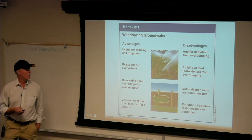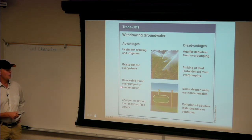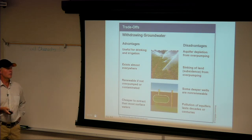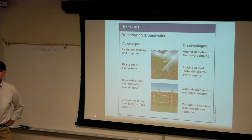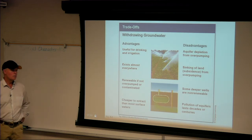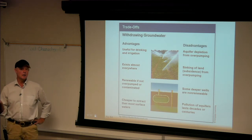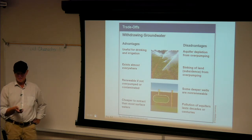Withdrawing groundwater — advantages: useful for drinking and irrigation, exists almost everywhere, renewable if not over-pumped or contaminated, and actually cheaper to extract than most surface water. Disadvantages: aquifer depletion, sinking of land — subsidence. Some deeper wells are non-renewable and may be contaminated. Pollution of aquifers can last decades or centuries. Hinkley and PG&E have spent hundreds of millions of dollars — it's the most expensive water pollution remediation project in the world. They still have 60 people working directly on it and 200 indirectly. Once you've polluted an aquifer, it's a huge deal to clean it up.